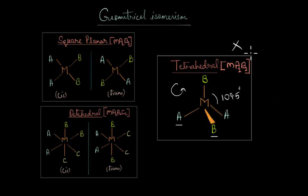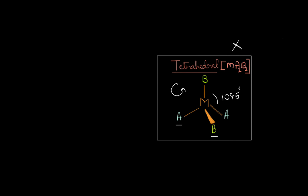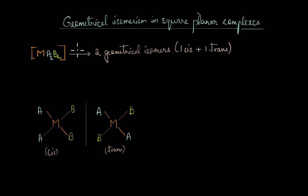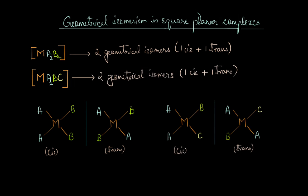With tetrahedral complexes out of the picture, let's focus on square planar complexes. In complexes of the type MA2B2, we get two geometrical isomers — one cis and one trans. Similarly, in complexes of the type MA2BC, where one B ligand is replaced with a different ligand C, we again get two geometrical isomers. If the A ligands are adjacent to each other we get the cis isomer, and if they are opposite to each other we get the trans isomer.